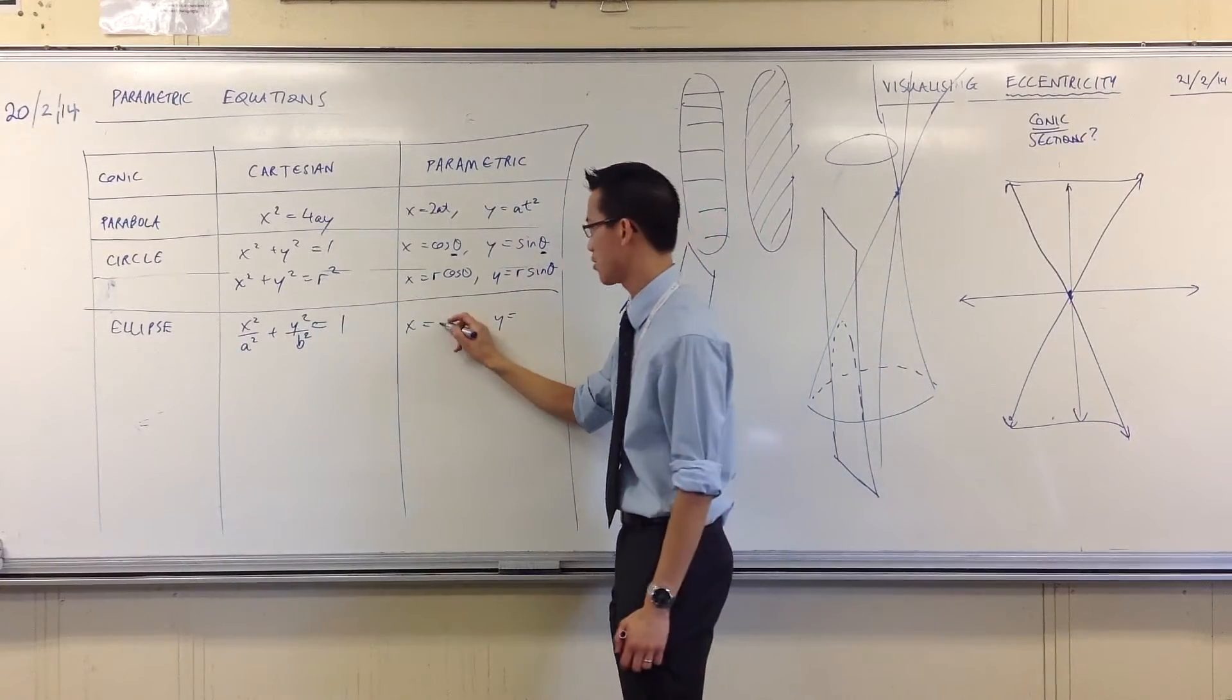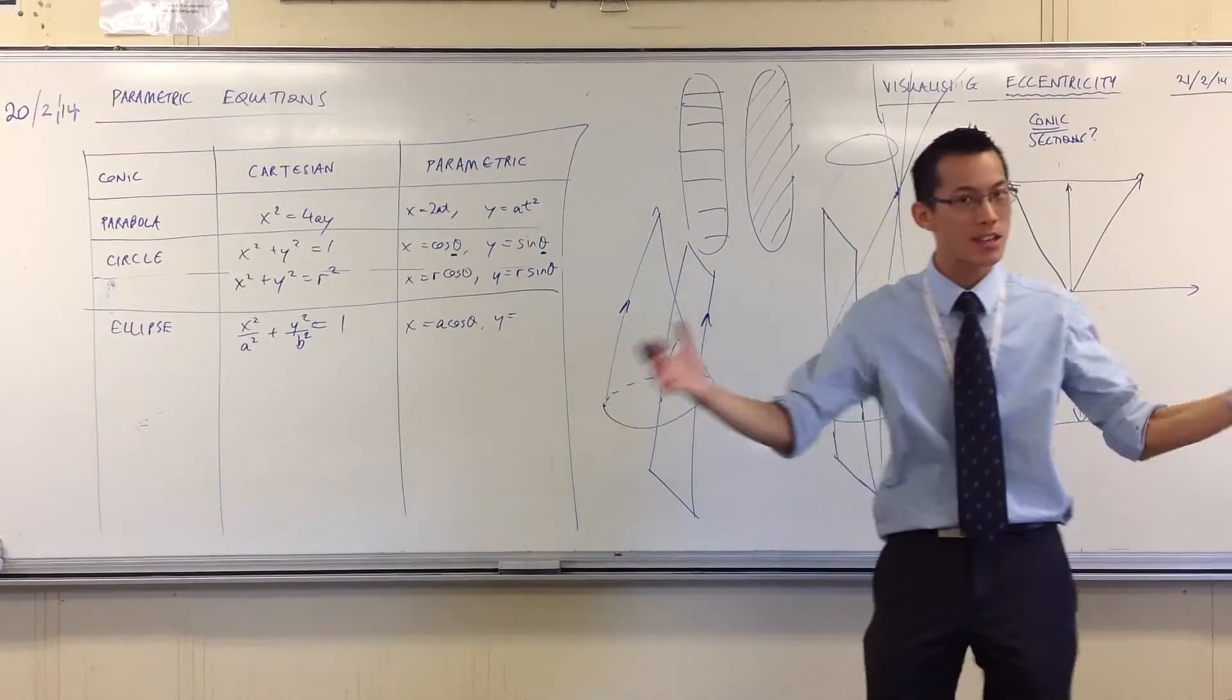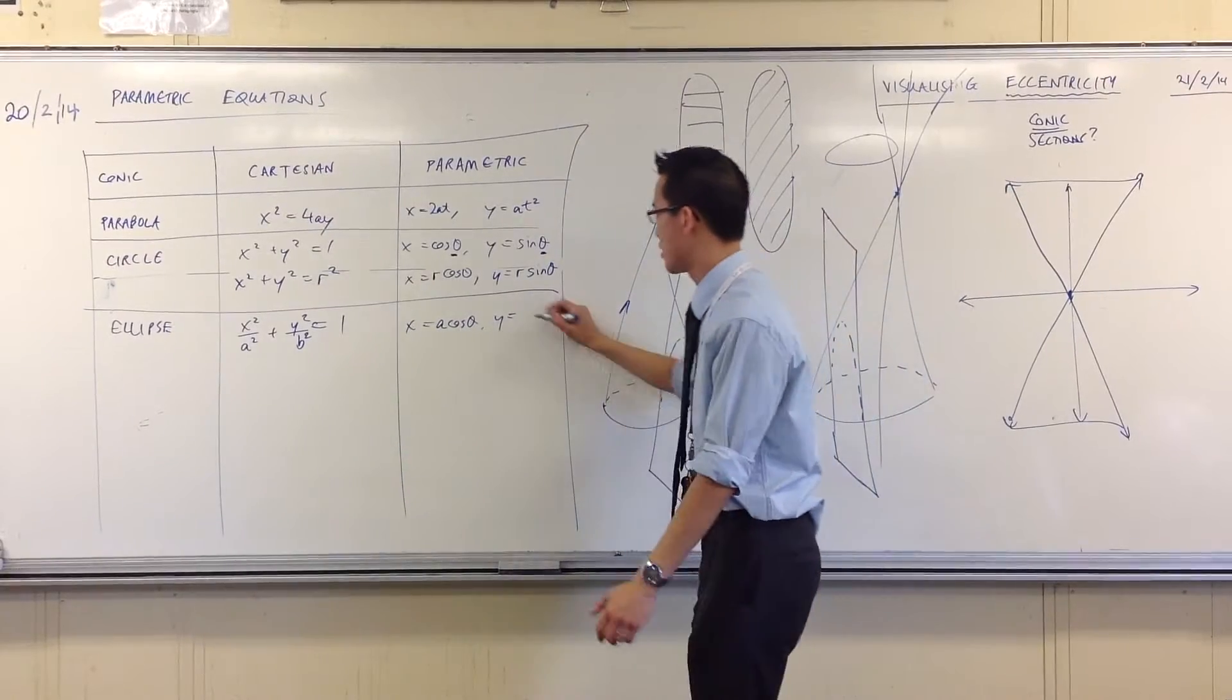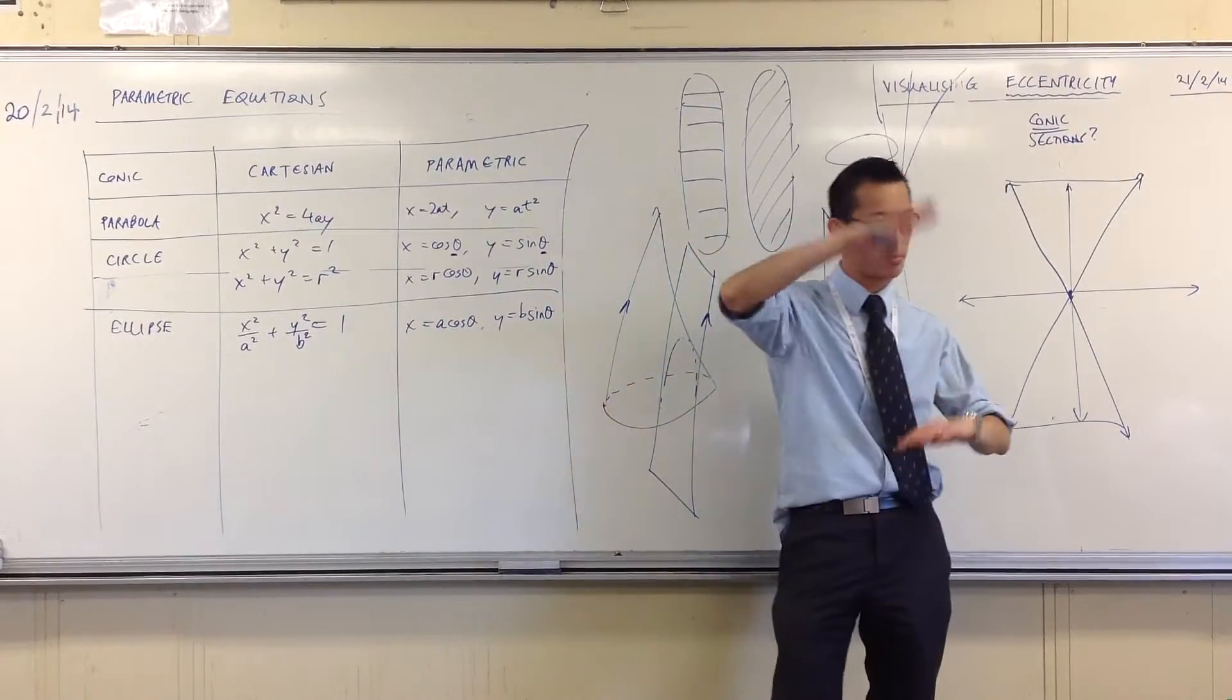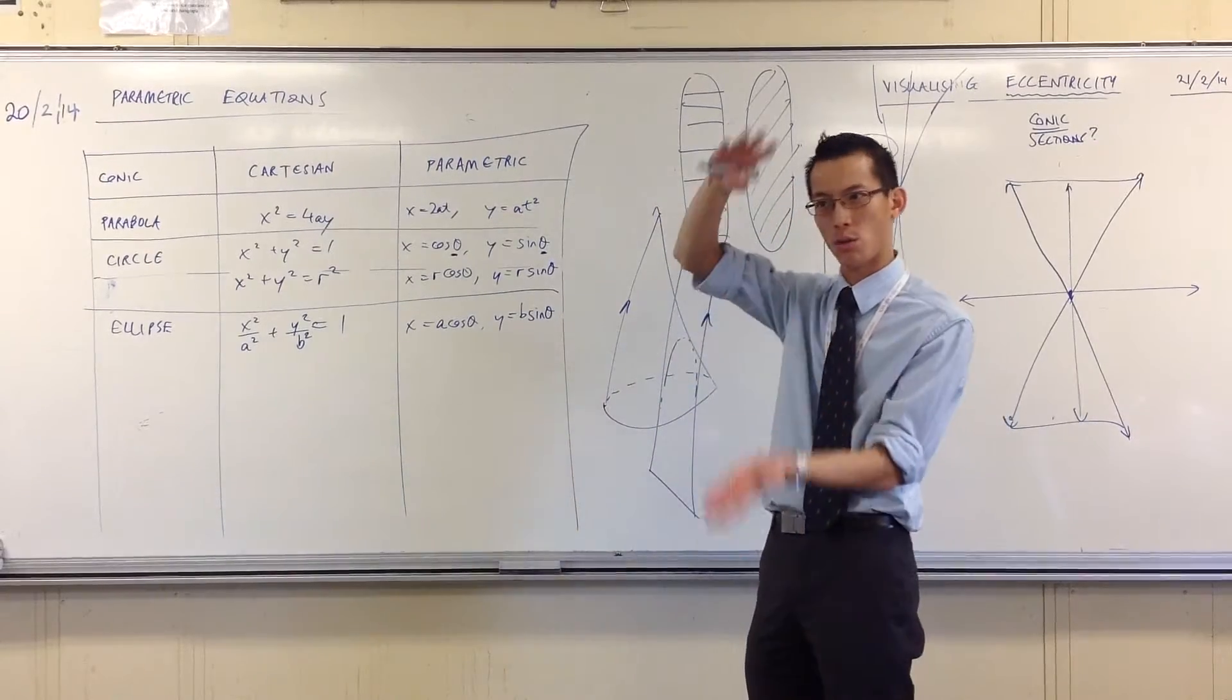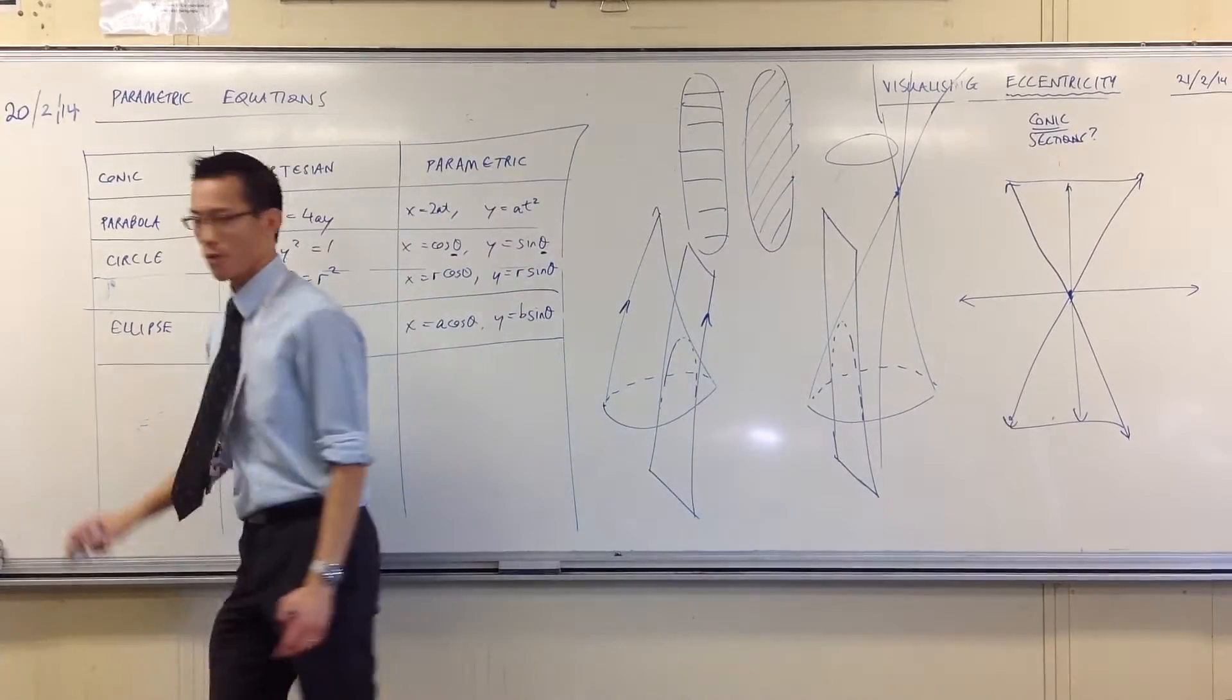So therefore, instead of r cos theta, you're just going to have A cos theta. That's how far across you can go. Right? A is what determines how wide your ellipse will be. And in the same way, because Y is operating on a completely different system based on how tall or squat you're making it, it will be B sine theta.